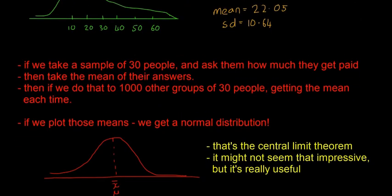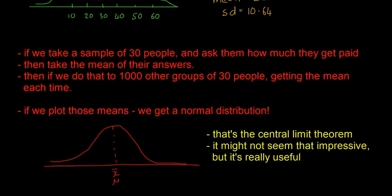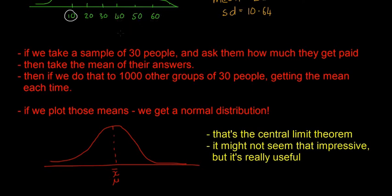To set up the central limit theorem, we can take a sample of 30 people from anywhere in Ireland who are working and ask them how much they get paid. We take the mean of all their answers — some people get 10, some 20, some 30, 40, 50, 60 — we add them all together, divide by 30, and find the mean of that sample.